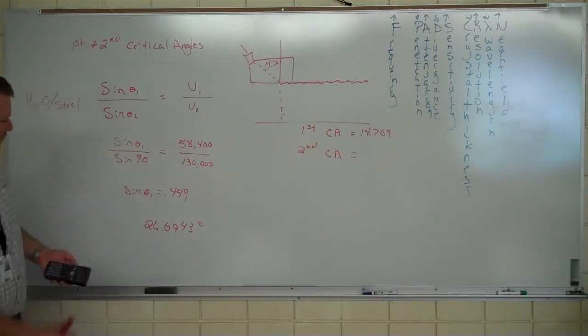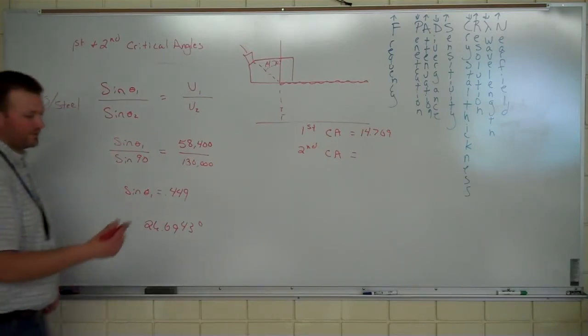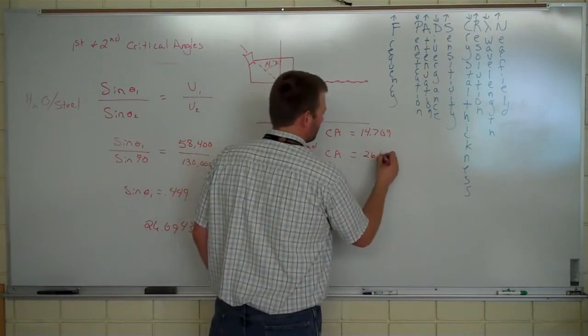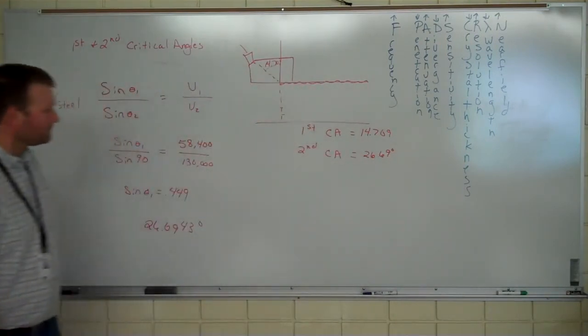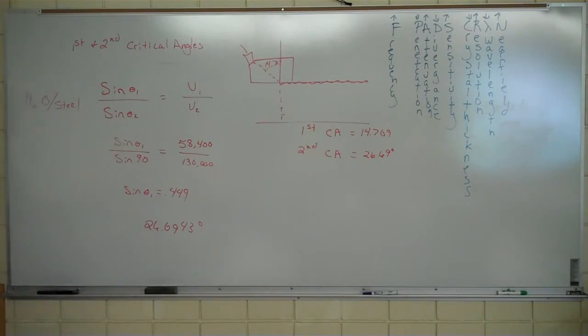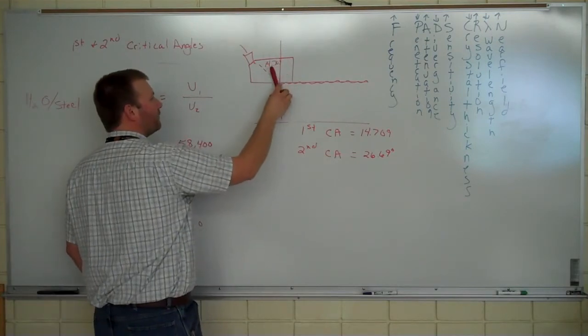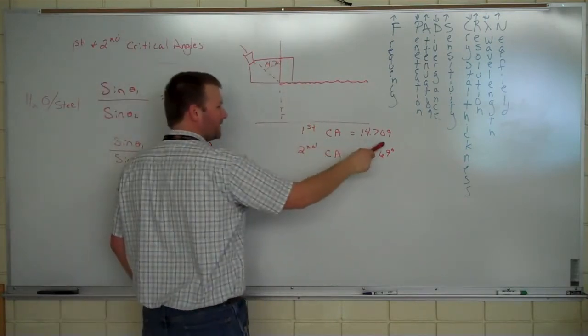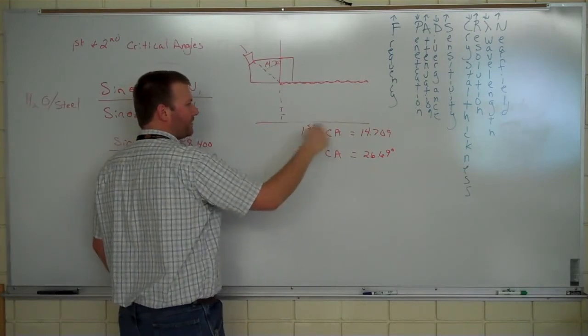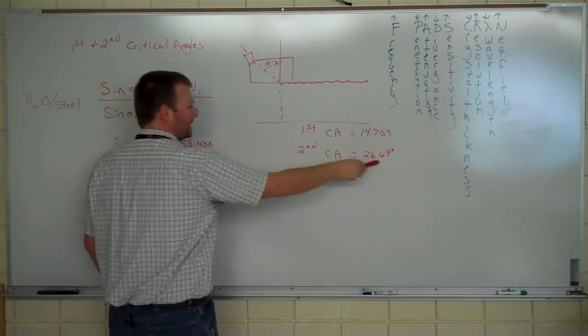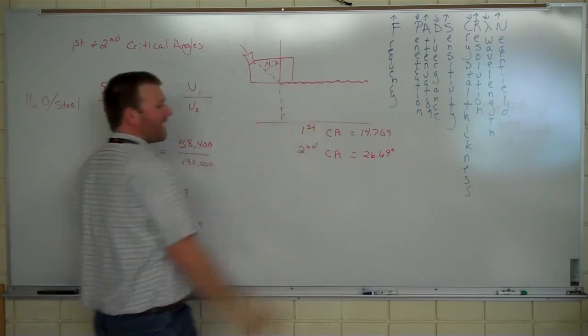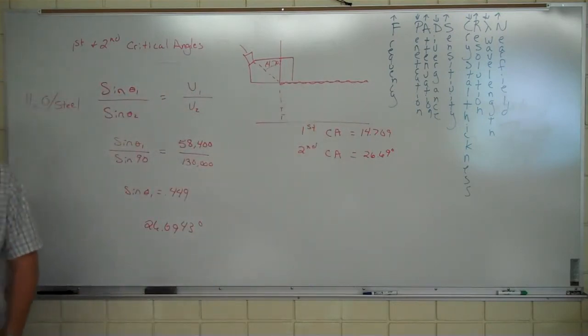Good with those? That tells us this. If we started out normal to the surface, we tip this back, we're in water at 14.71, roughly. We're going to reflect the longitudinal wave out. We're going to be left with shear. Keep tipping that back to 26, roughly 27, and we're going to refract out or reflect out the shear wave. Right? Good with all that? Good with all that.